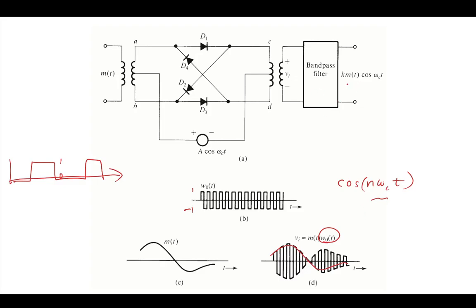You pass it through that bandpass filter. Your final result is going to be your message multiplied by some carrier frequency. This coefficient k simply means that if you pass it through here, you may change the amplitude a bit. You have a bunch of circuit parts, so you might change the amplitude a bit. But the end result is a modulated message with some constant coefficient.